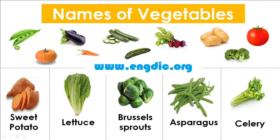Hello everyone, welcome back. Improve your vocabulary with veggies. Before starting our lecture, let me confirm if you really know what vegetables actually are. Vegetables are parts of plants that are consumed by humans or other animals as food. The original meaning is still commonly used and is applied to plants collectively to refer to all edible plant matter, including the flowers, fruits, stems, leaves, roots, and seeds.